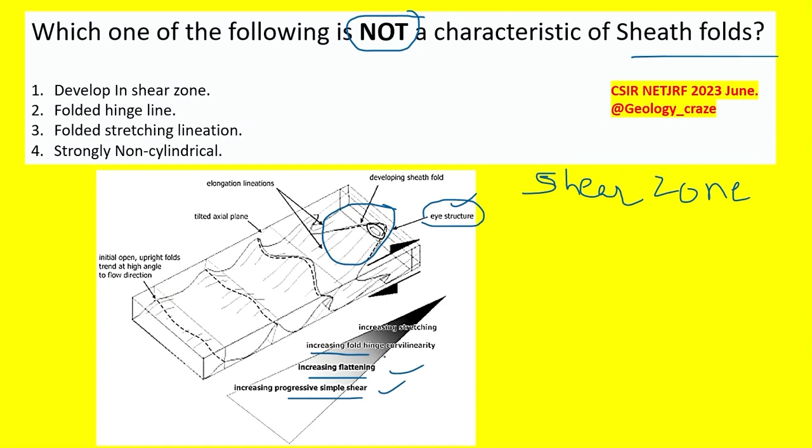Increasing fold hinge curvilinearity - the hinge line that was straight will now become curved. Increasing stretching takes place, and too much stretching in this case. The fold is non-cylindrical because the hinge line is not straight.